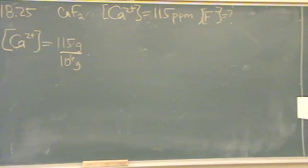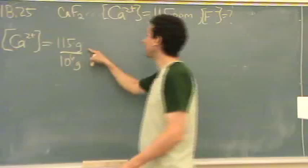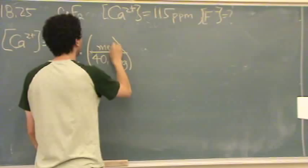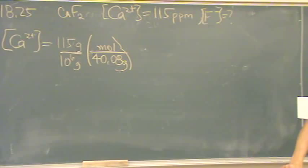To do moles, you go over to your periodic table and just convert to moles. So it's 40.08 grams per mole, because this is of calcium. You just multiply, 40 grams per mole.